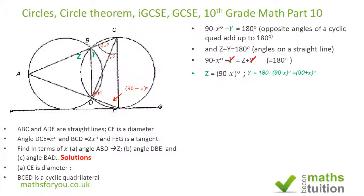So angle ABD is 90 plus x degrees, and if you add both this one and that one you get 180 degrees.